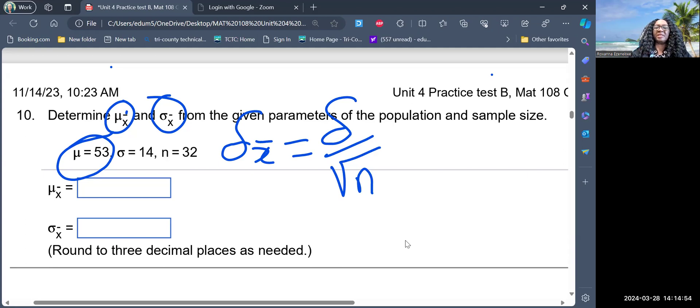All you have to do is, and this implies, they gave me everything. The standard deviation of the original data is 14. The sample size is 32, so it will be square root of 32.